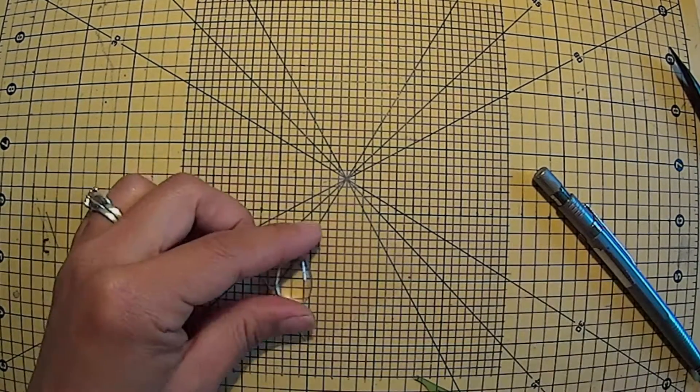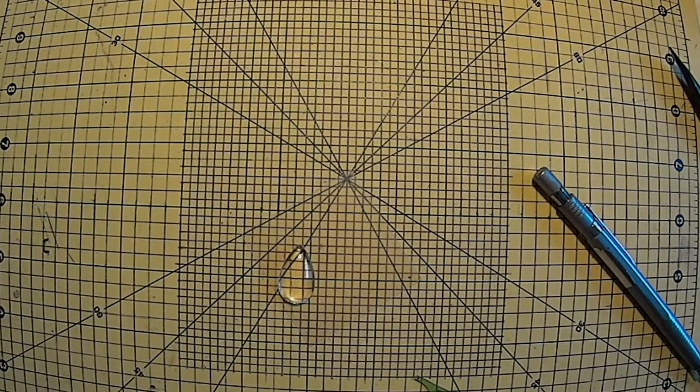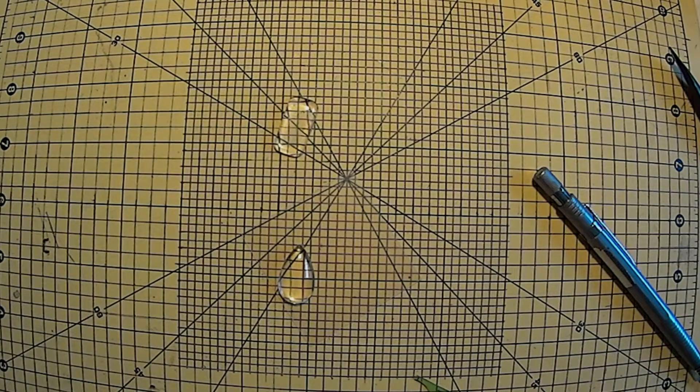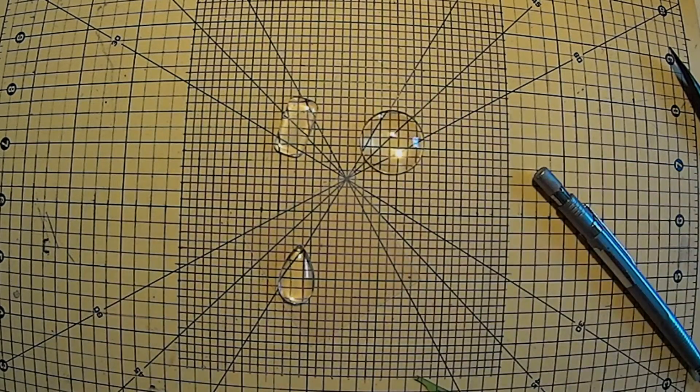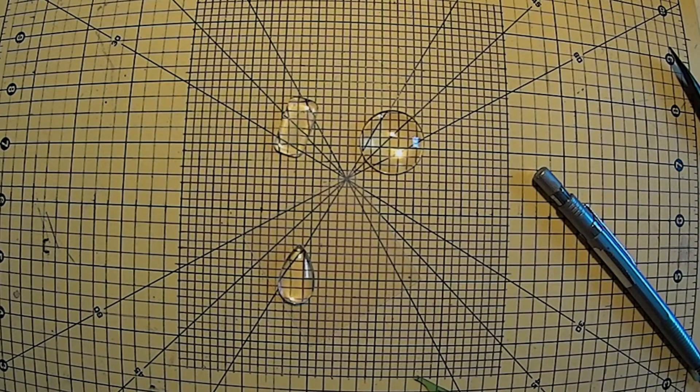I like to use glass cabochons to create my templates. The cabochons come in many different sizes and shapes such as teardrop, rectangular, circular, and square, just to name a few.